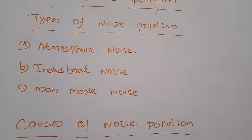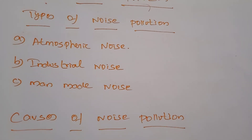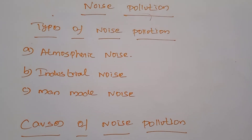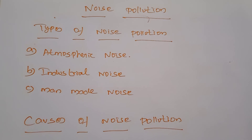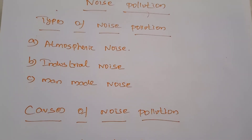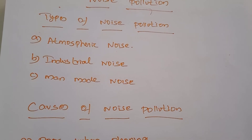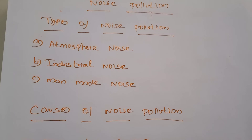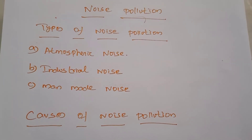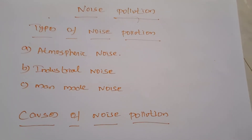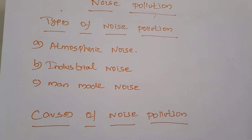Atmospheric noise or static is caused by lightning discharges in thunderstorms and other natural electrical disturbances. Because of thunderstorms and lightning, some humans and plants are also affected — this is called atmospheric noise. Industrial noise refers to noise created in factories; some sound becomes unwanted noise. Heavy industries like shipbuilding, iron and steel, and cement factories have long been associated with noise. Wherever noise comes from industrialization activities, it is considered industrial noise.